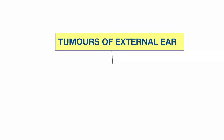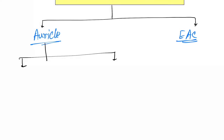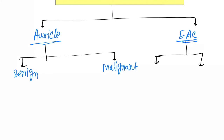Hello friends, today our topic is the tumors of external ear. Tumors of the external ear can be of the auricle and external auditory canal. In the auricle there are benign tumors and malignant tumors, and in the external auditory canal there are also benign tumors and malignant tumors.